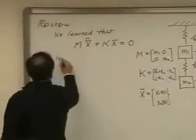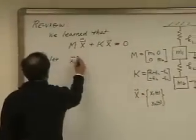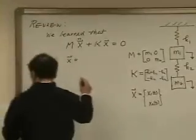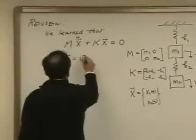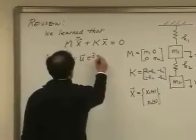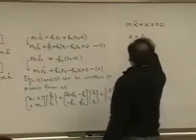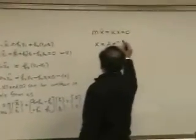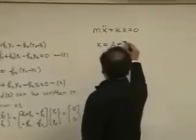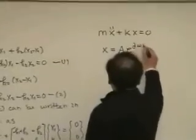And then what we did is let X be U exponential j omega t, as we did with the single degree of freedom system. We let X equals A e to the j omega t.